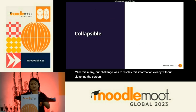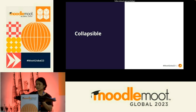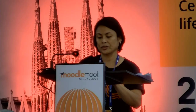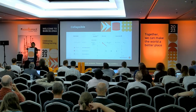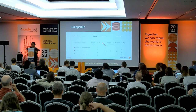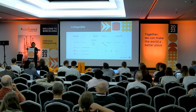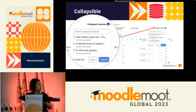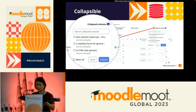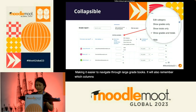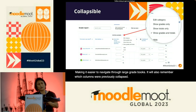At times there can be too much information visible, and that's where collapsing comes in handy — remove from the screen the elements that don't require your attention and focus on what does. On the grader report, grade items can be collapsed using the menu shown previously. When collapsed, the columns take minimal horizontal space, making it easier to navigate through large gradebooks, and it will remember which columns were previously collapsed. Collapsed columns can also be managed from the navigation bar, allowing you to expand them individually or altogether. Collapsing categories has additional options, like keeping the category totals and hiding all the grades it contains, or vice versa.